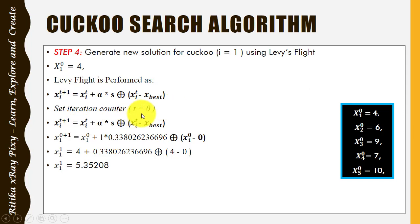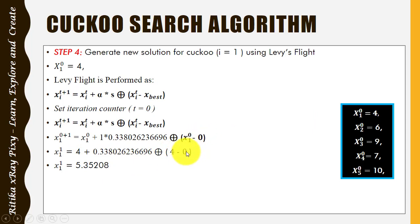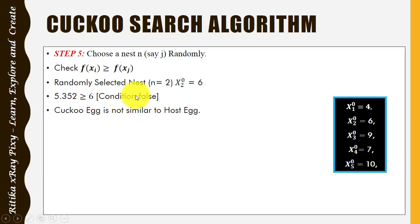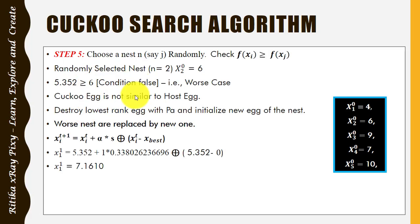Set the counter to 0, t = 0. The position of the first cuckoo at iteration 0 is 4. Global best is 0 since we have no global best position at this initial stage. We calculate the new solution for the first cuckoo and get 5.35. Next, choose a nest randomly and compare the cuckoo value with that nest. I selected nest number 2, which has value 6.